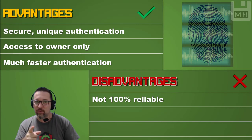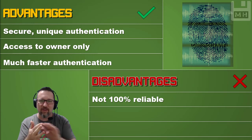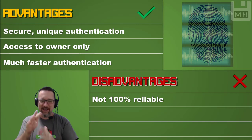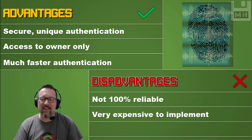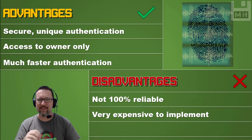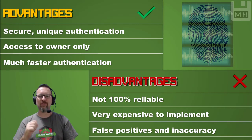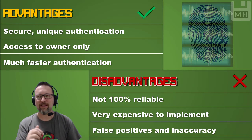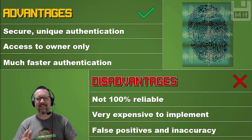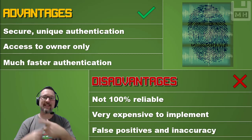However, fingerprint scanning is not 100% reliable. You've probably experienced trying to unlock your phone with your thumb and it just doesn't work — maybe your finger is wet or has something on it. Implementing biometric authentication in businesses is also very expensive due to the technology and equipment involved. There are also false positives and inaccuracies — it could register someone else's fingerprint as yours, which has happened before.